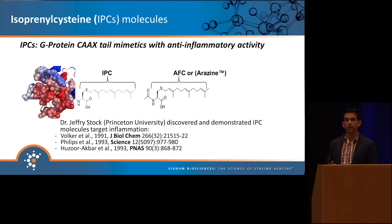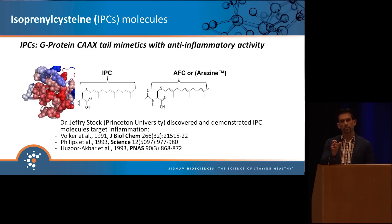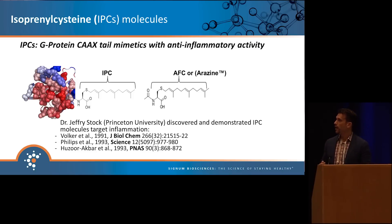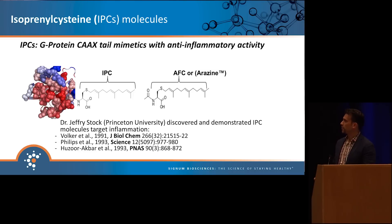Studying G-protein signaling in Princeton in the early 90s, Dr. Jeffrey Stock, who is a co-founder of Signum Biosciences, generated isoprenylcysteine mimetics, or IPCs for short, looking at how these proteins were interacting and binding with each other, and how they were triggering inflammation. He found that the mimetics themselves had anti-inflammatory activity, and published some of this work in a series of papers in the early 90s.